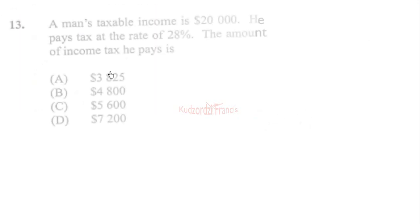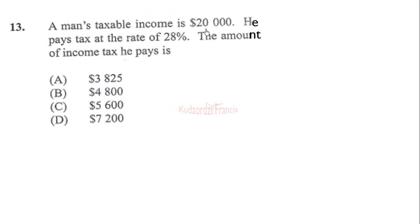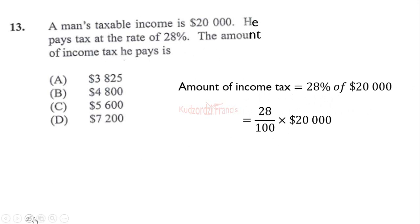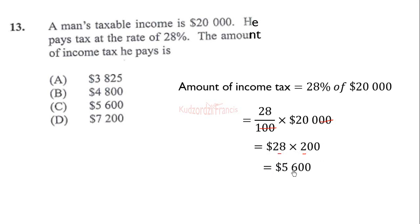Question 13: a man's taxable income is twenty thousand dollars and he pays tax at the rate of twenty-eight percent. The amount of income tax he pays is twenty-eight percent of twenty thousand, which is twenty-eight over one hundred times twenty thousand. Cancelling, we are left with twenty-eight times two hundred. Two times twenty-eight gives fifty-six, and including the double zeros gives five thousand six hundred dollars. Therefore the correct answer is option C.